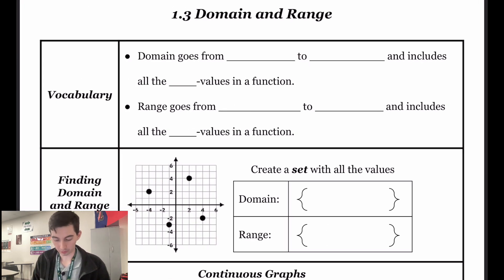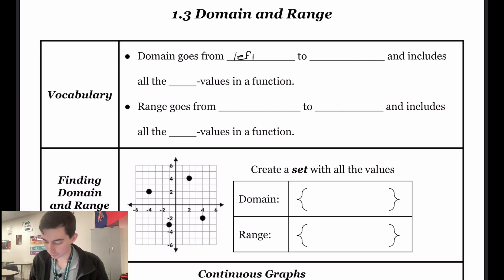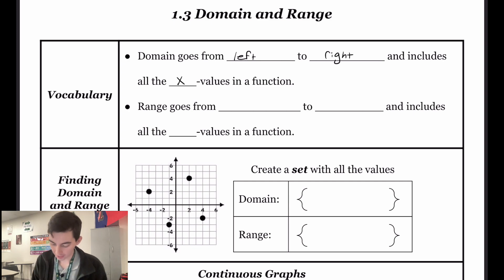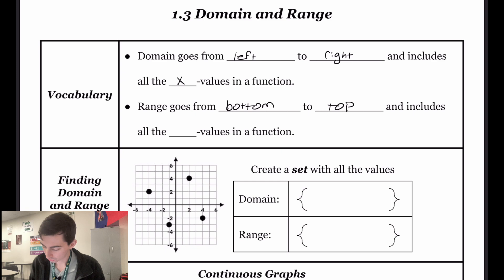We're going to start with some vocabulary. We need to define what domain and range are. Domain goes from left to right and it includes all of our x values in the function. Range is just the opposite — range goes from bottom to top and it includes all of the y values in our function.